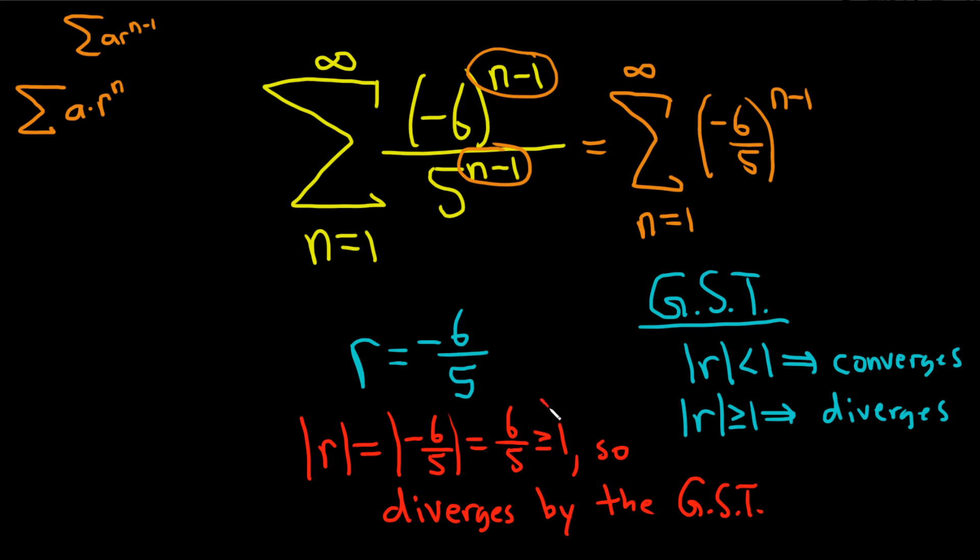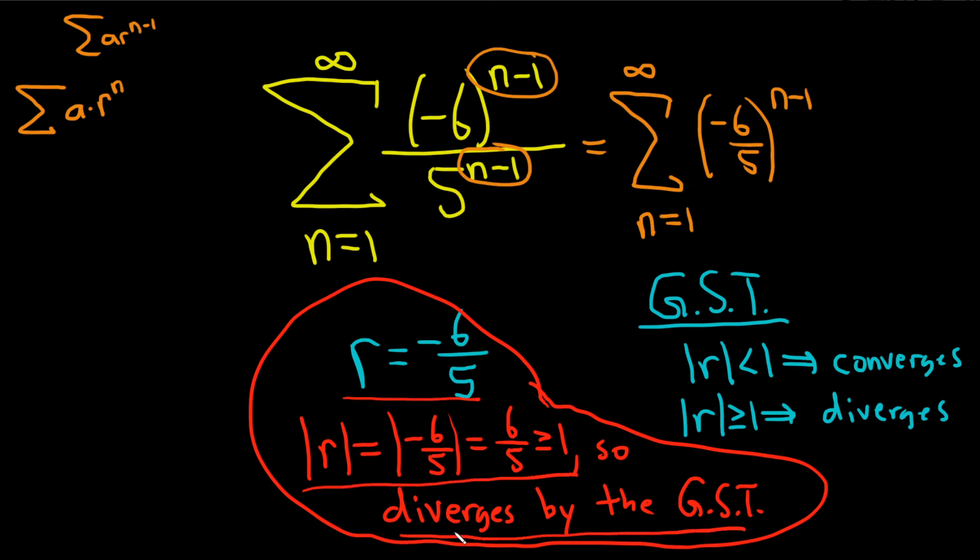Really important to justify. This would be the solution to the question, right? This would be the answer. This is what you would want to write if you were taking this, maybe you're taking a class and you have a homework problem or you're studying. This would be an acceptable answer, because you're specifying the r, you're specifying the condition from the test, and then you're citing the test and the conclusion of the test. It diverges. Why? By what test? By the geometric series test.